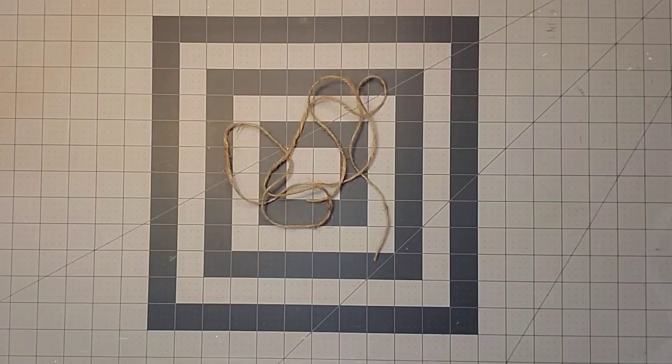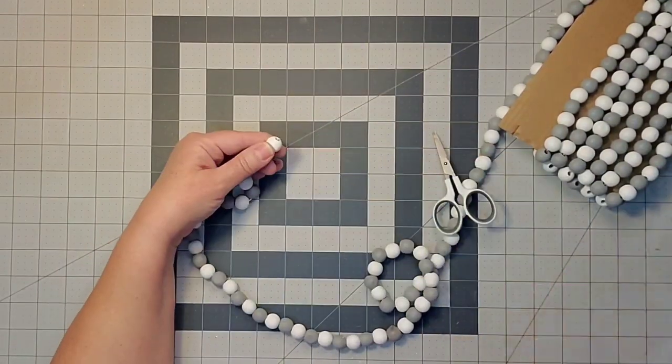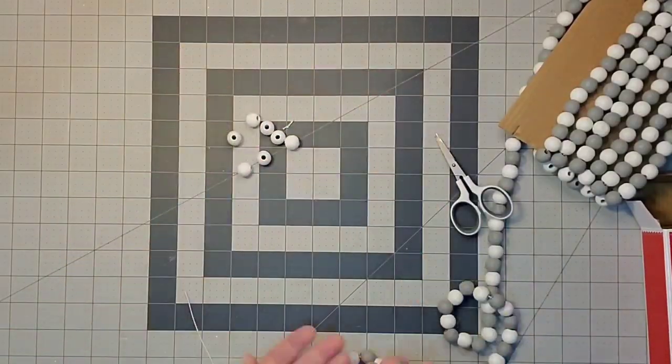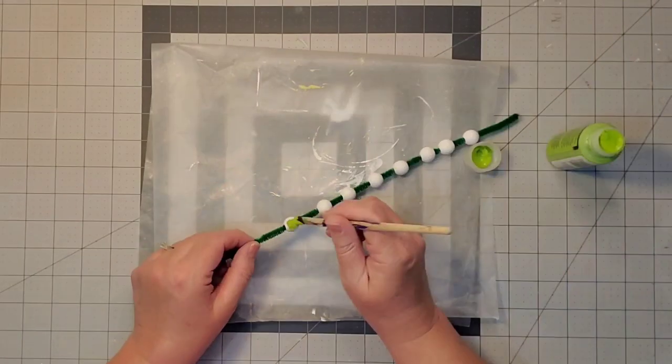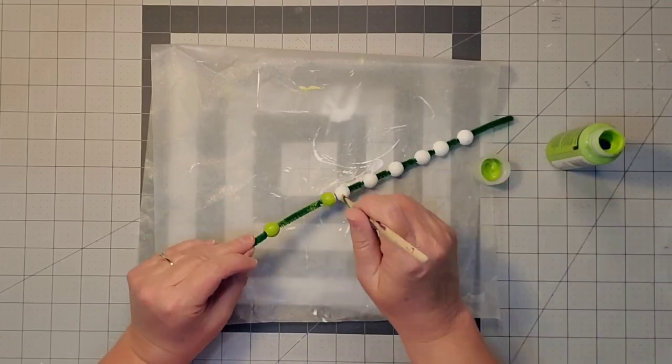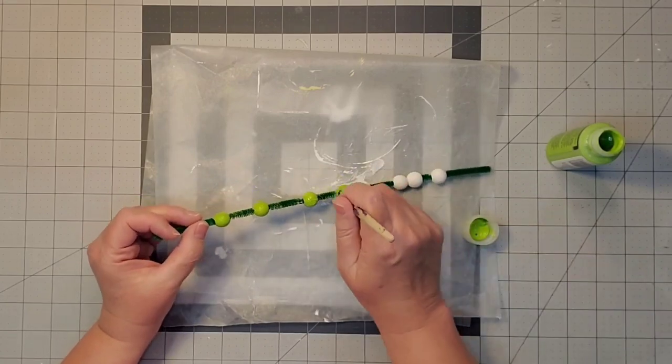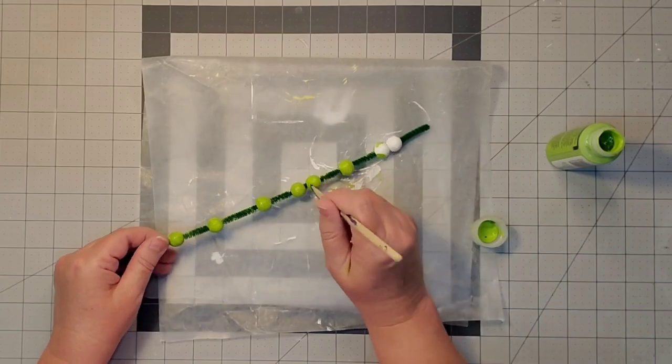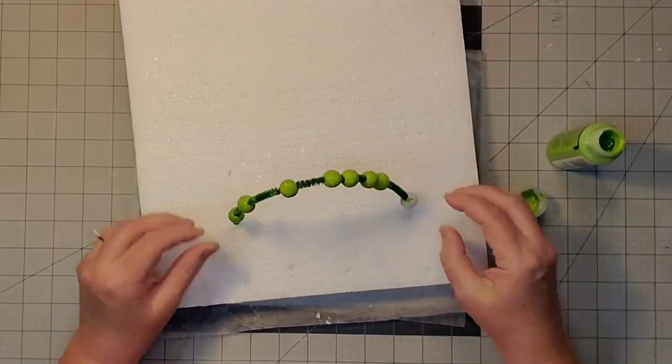I'm going to use twine from the Dollar Tree and these white beads from Walmart. You need six beads. I'll paint them in citrus color, putting them on a chenille stem to facilitate painting, then stick it into styrofoam so they can dry.